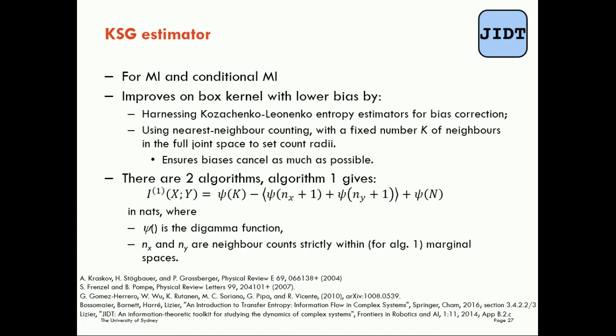One important thing to keep in mind is that there are two algorithms for KSG estimation that work slightly differently. Algorithm one counts or fixes the radii around each point to pick the k nearest neighbors, then counts the neighbors in the marginal space x within that radius and the neighbor count y in its marginal space within the same radius, plugging them all into the equation and taking the expectation value across all focal points. Importantly, the psi function here is the digamma function. The equation for algorithm two is ever so slightly different, which you can look up in the papers.